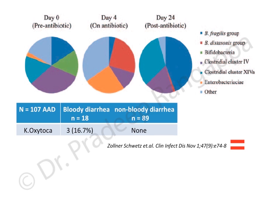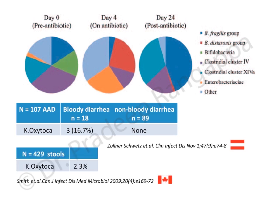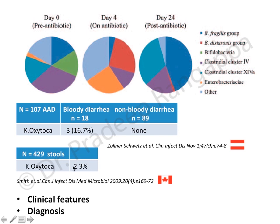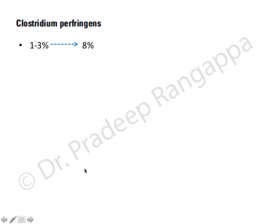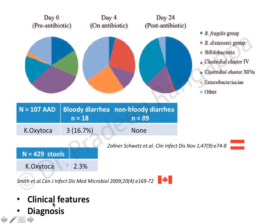A Canadian study looking at 429 stools found Klebsiella oxytoca present in 2.3 percent. Clinical features become important in approaching diarrhea - stool quality and presence of blood guide diagnostic algorithms. Regarding Clostridium perfringens, its occurrence rate is 1 to 8 percent, with a median duration of onset around seven days after ICU admission.